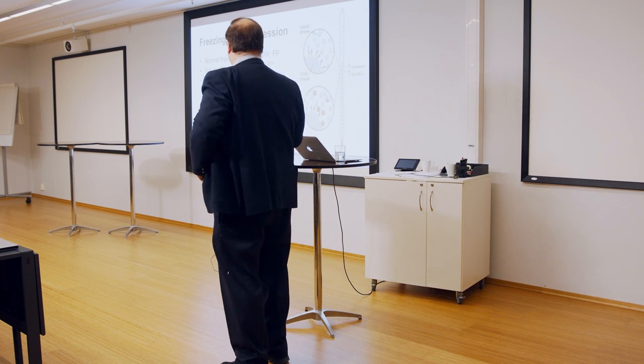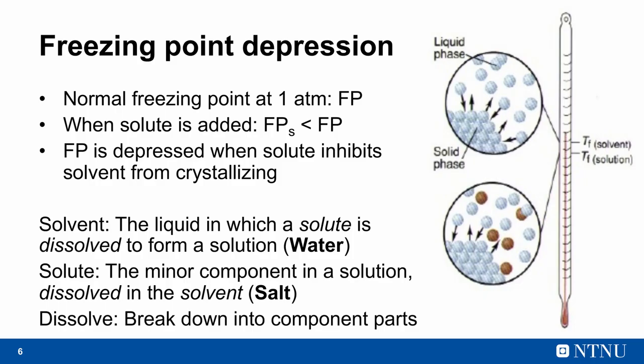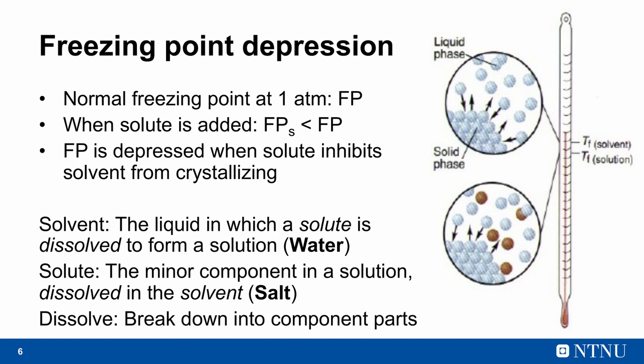And so the point is, what we are utilizing in using salt for hardening is this freezing point depression. So at normal atmosphere we have zero for water. When we add a solute, then we reduce the freezing point temperature because the potential will be lower or you can think about this molecule. You can think about the solute that is kind of blocking the water molecules to get solid. So we talk about a solvent and that is the liquid in which a solute is dissolved to form a solution. So in our case it is water. The solute is the minor component in a solution dissolved in the solvent salt.